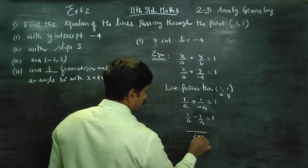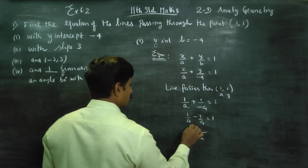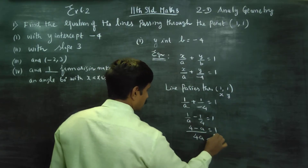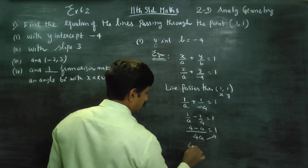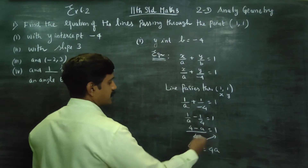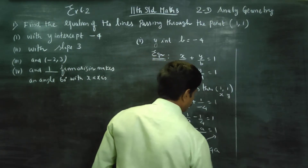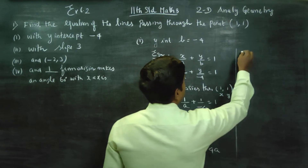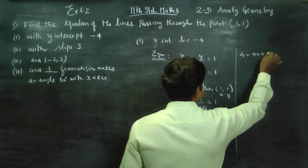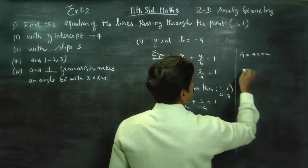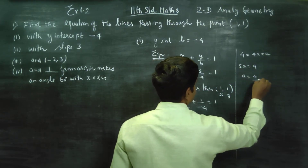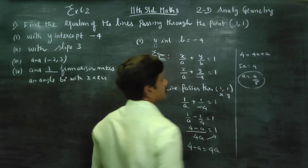The LCM will be 4a. Cross multiplying: 4 − a = 4a. So 4 = 4a + a = 5a. Therefore a = 4/5. That gives us the x-intercept.